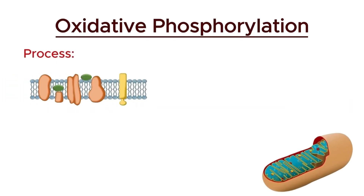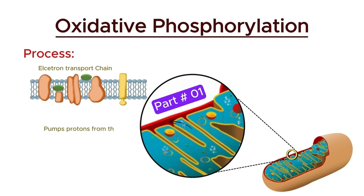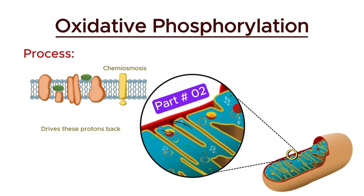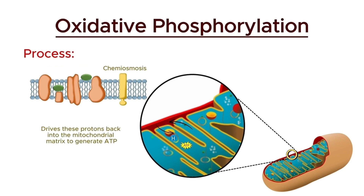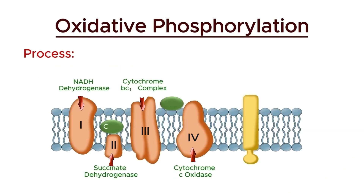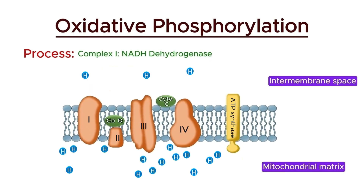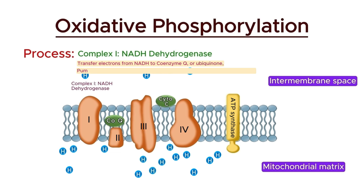The electron transport chain pumps protons from the mitochondrial matrix into the intermembrane space, and chemiosmosis drives these protons back into the mitochondrial matrix to generate ATP. Let's see how the process works in detail. The first stage focuses on complex 1, also known as NADH dehydrogenase. NADH dehydrogenase is responsible for transferring electrons from NADH to coenzyme Q, or ubiquinone, and for pumping protons from the mitochondrial matrix into the intermembrane space.